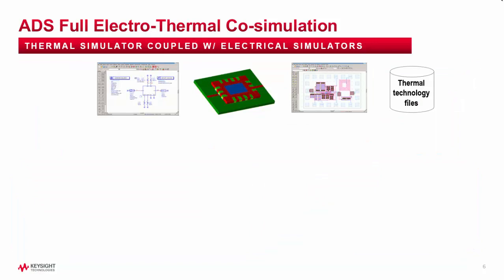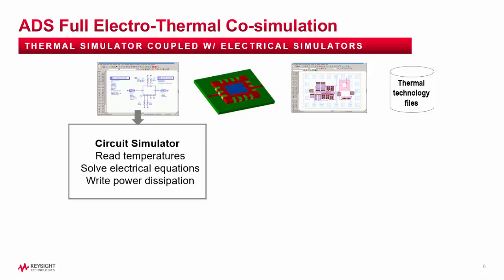To run an electro-thermal co-simulation, you will need both schematic and layout views of your design. You'll also need thermal technology files. The thermal tech files define material properties, the mask and heat layers, and the substrate stack-up in the Z dimension. There are many foundries which provide thermally-enabled PDKs in ADS that include thermal tech files. The process begins by running a circuit simulation — we support DC, AC, S-parameters, harmonic balance, transient, and circuit envelope.